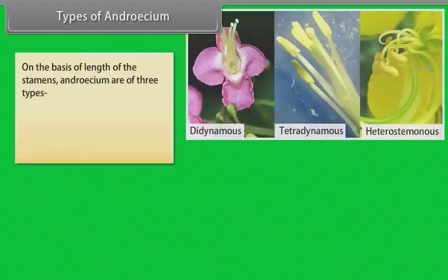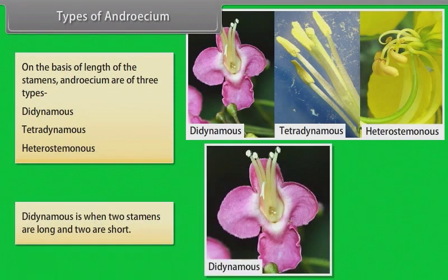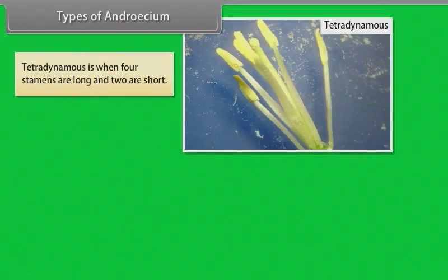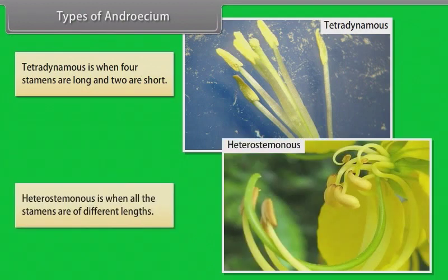Types of androecium based on length of stamens: Didynamous — when two stamens are long and two are short. Tetradynamous — when four stamens are long and two are short. Heterostaminous — when all the stamens are of different lengths.